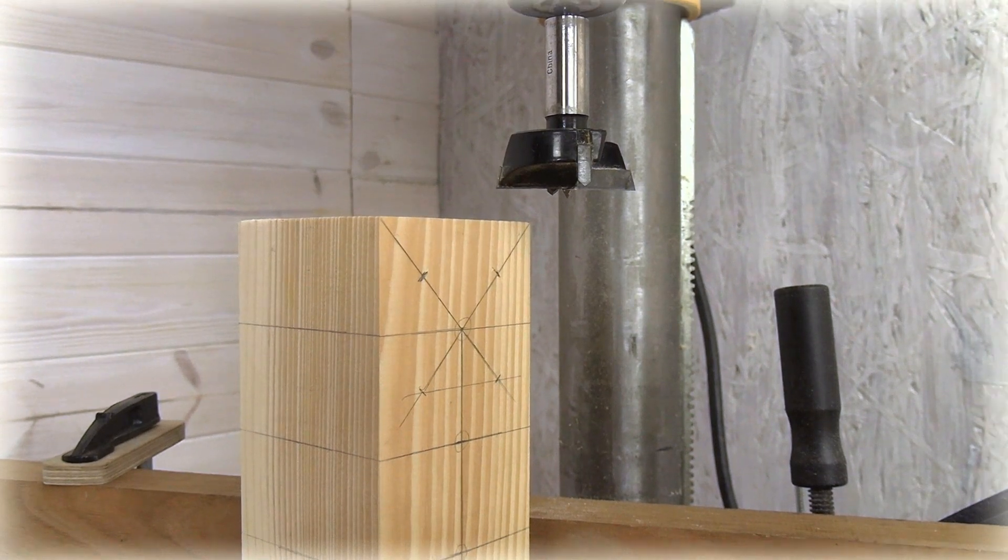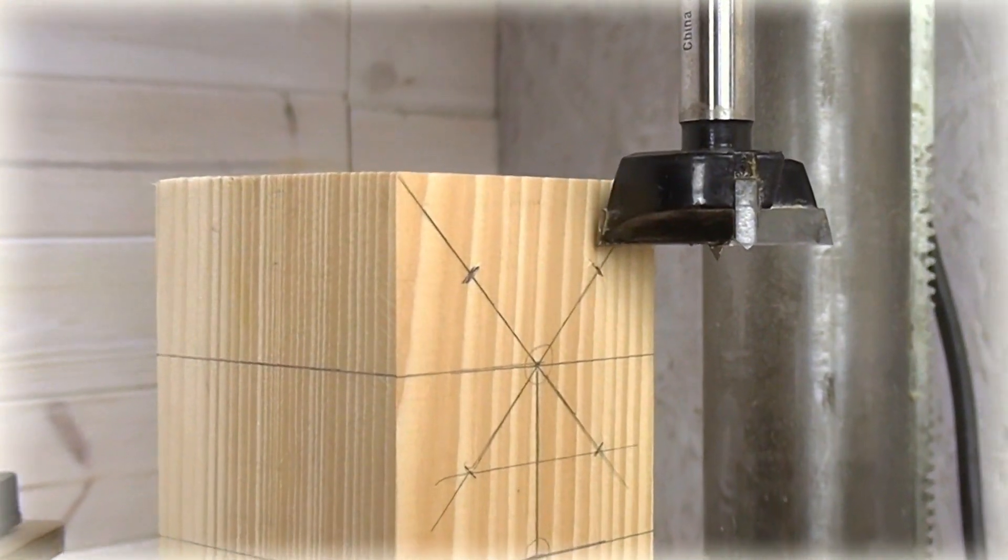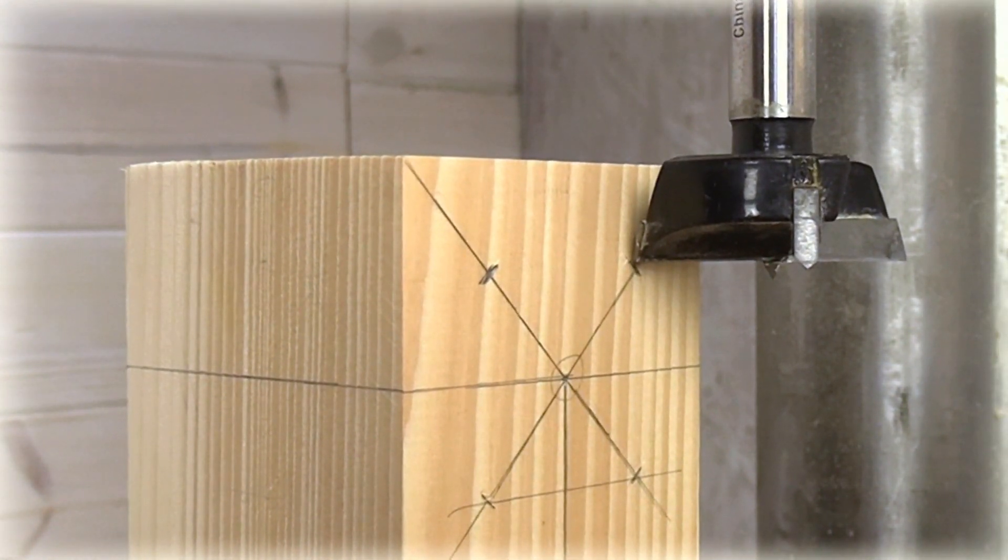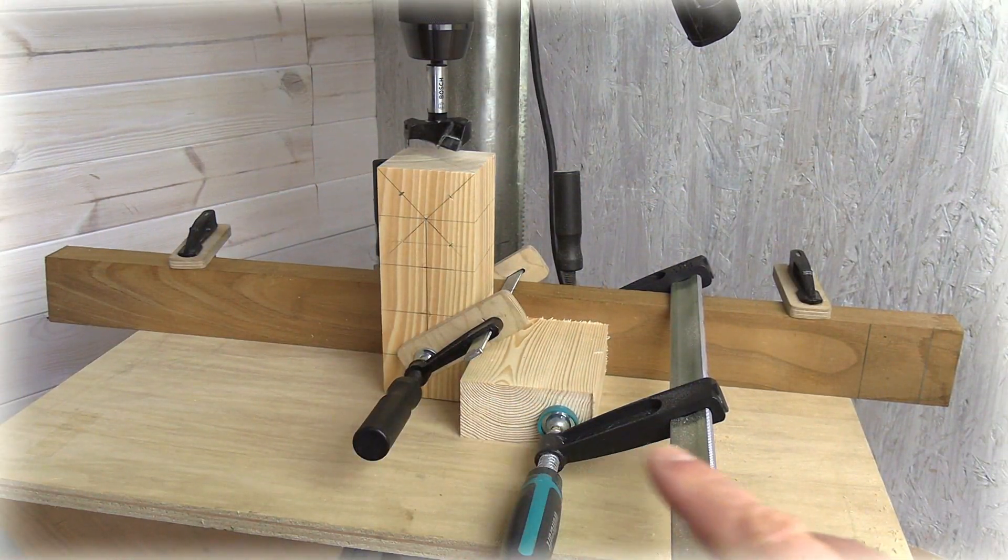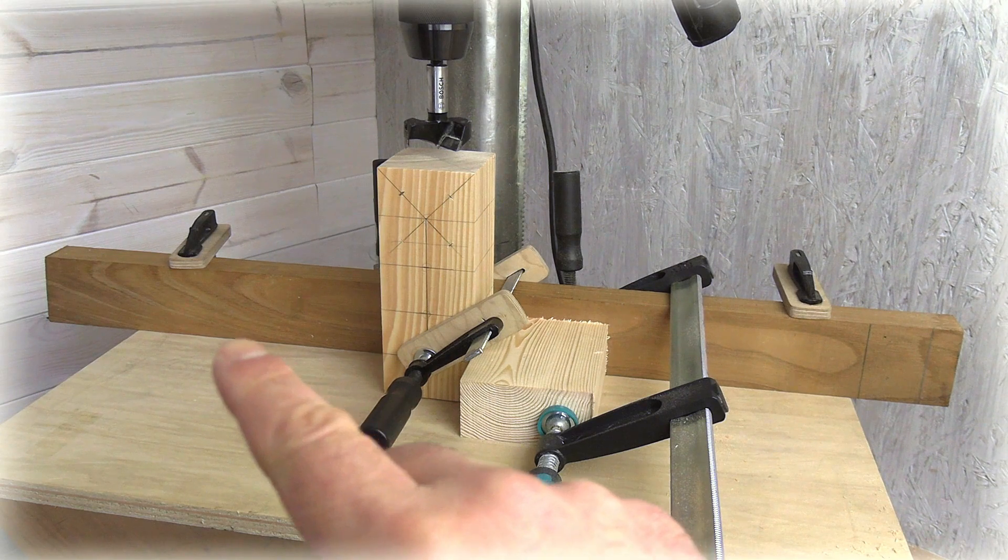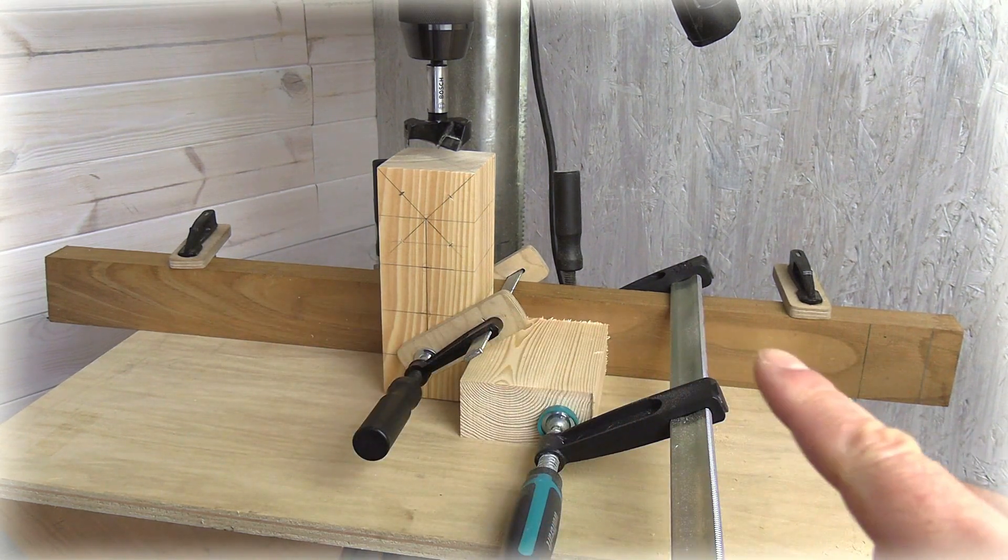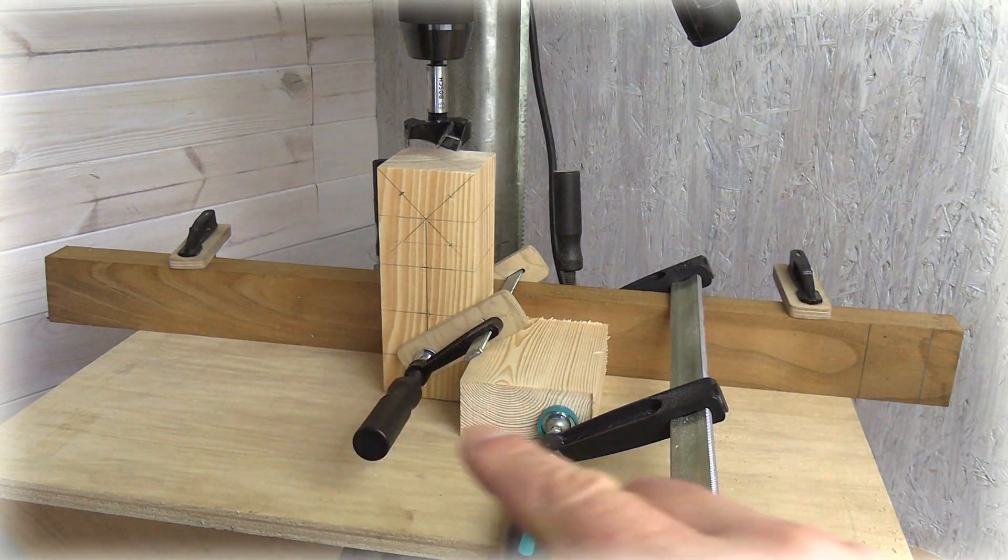On the drill press, I adjust the depth stop a little above the marks I made on the lines. And here, I have my makeshift wooden drill press table clamped. I have clamped a fence and I also clamped a stop lock.